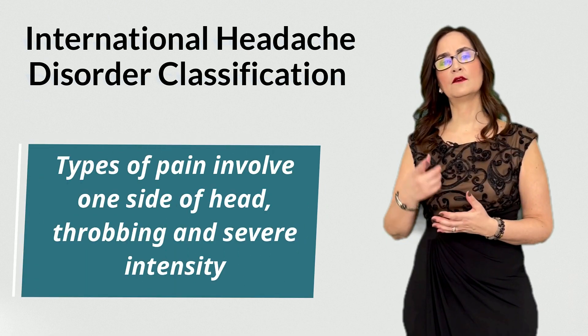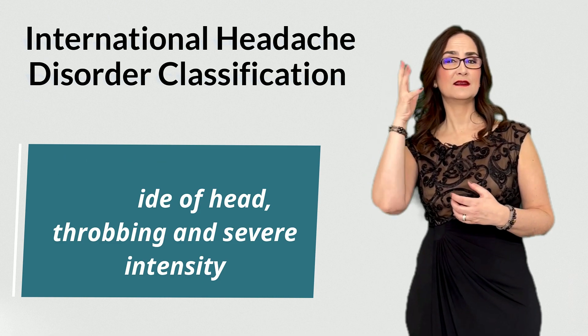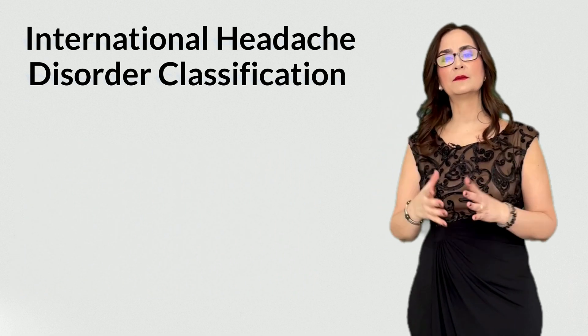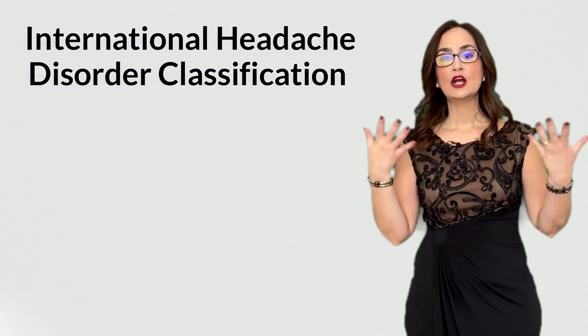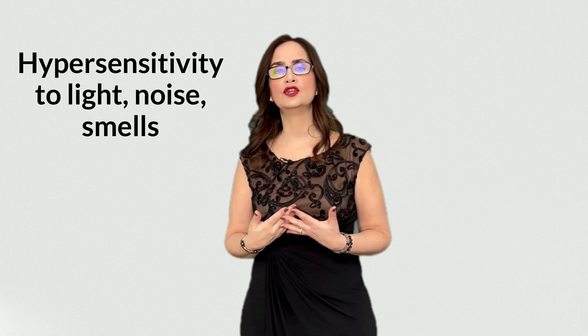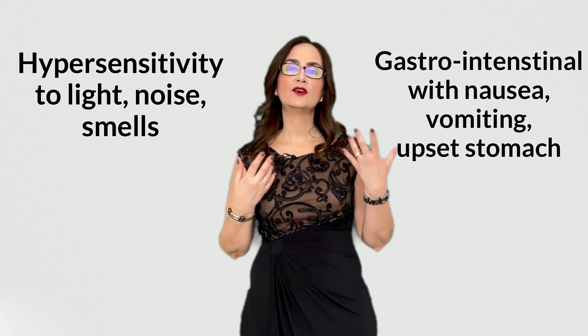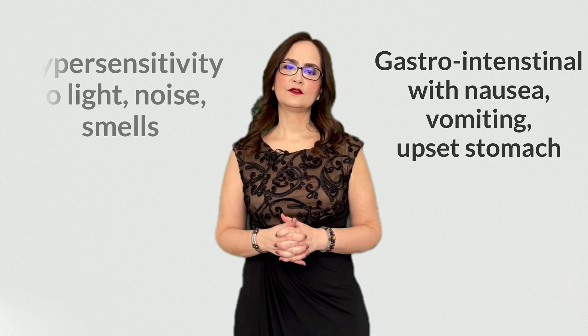The episodes of headaches usually last from a few hours to a few days. The most common type of pain involves one side of the head, throbbing and severe in intensity. We will talk about the many types of migraines and how they vary in pain characteristics. So here is the big difference between a migraine and a headache: migraines come with other symptoms from two categories. One is hypersensitivity to light, noise, and smells. And the other is gastrointestinal, with nausea, vomiting, or just an upset stomach.